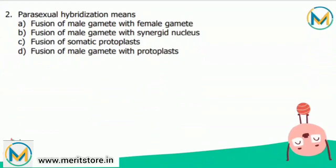Next question: parasexual hybridization means? Parasexual hybridization is a non-sexual mechanism of transferring genetic material by fusion of cells of different characteristics. The protoplast fusion technique is used for hybridization. Protoplasts are cells without a cell wall, and the absence of cell walls helps to overcome barriers for fusion.